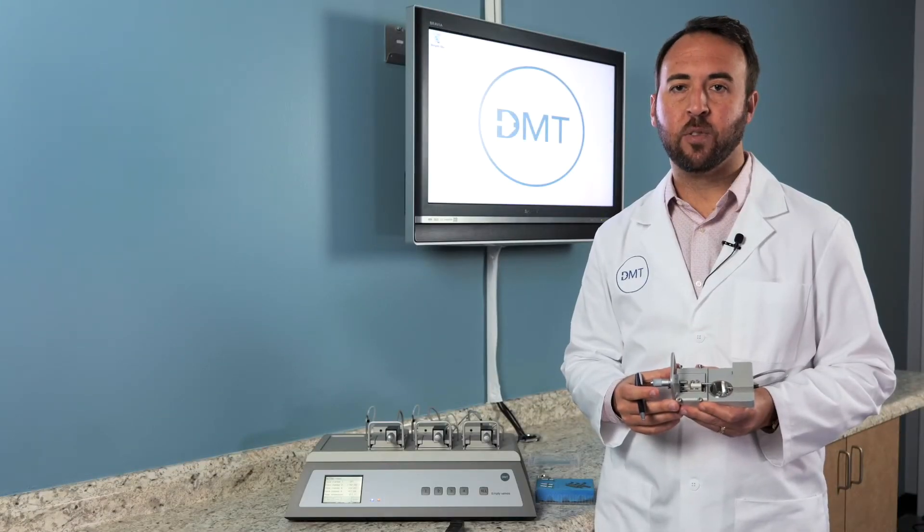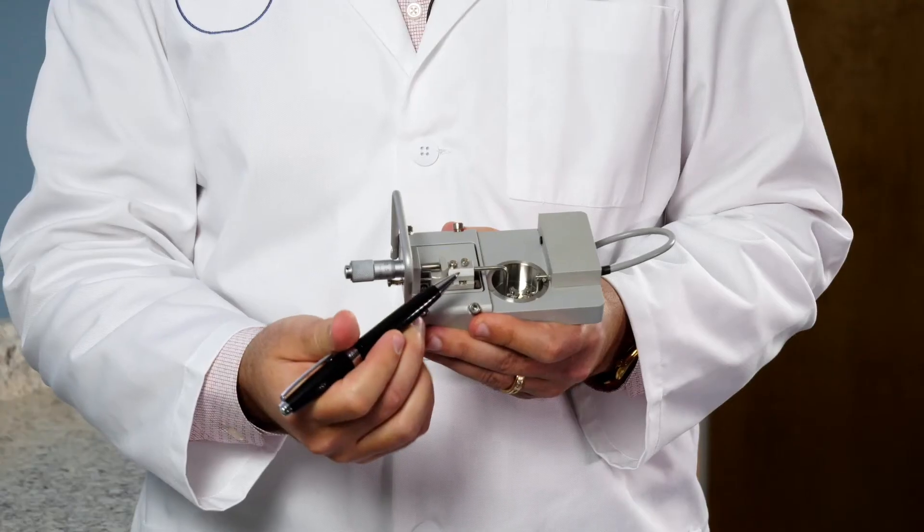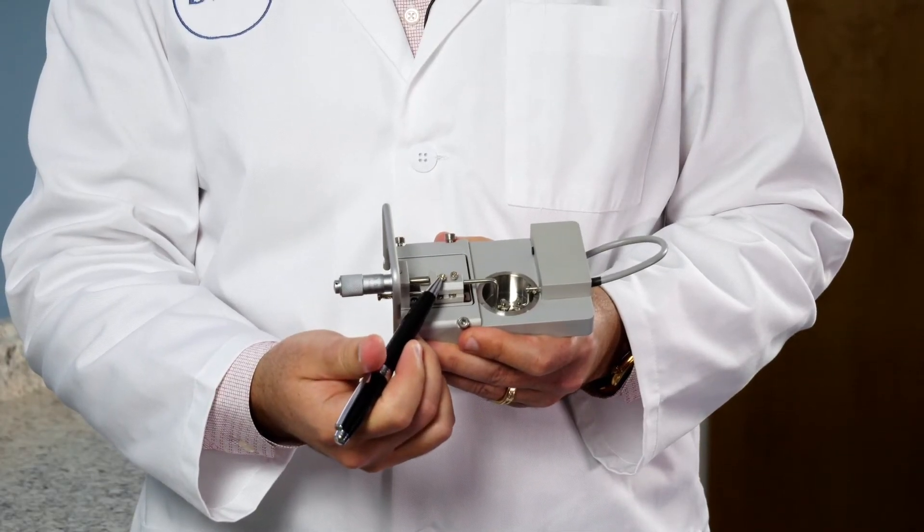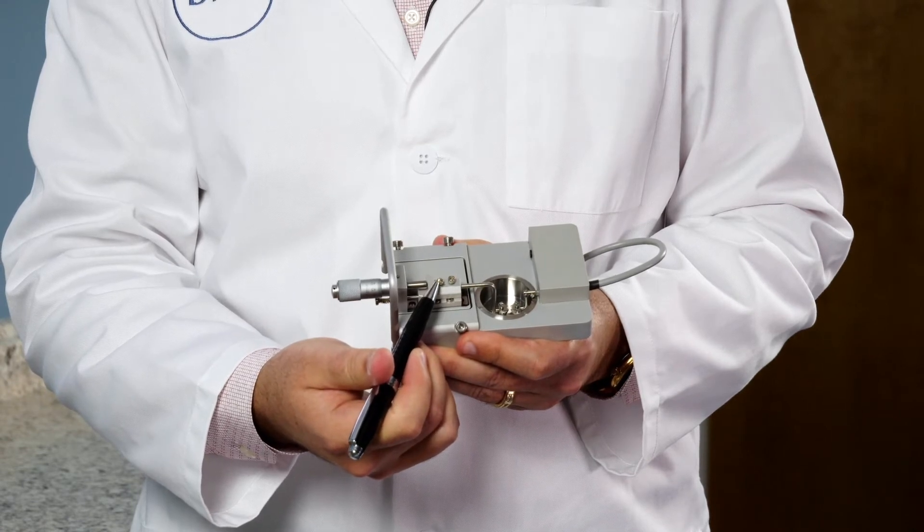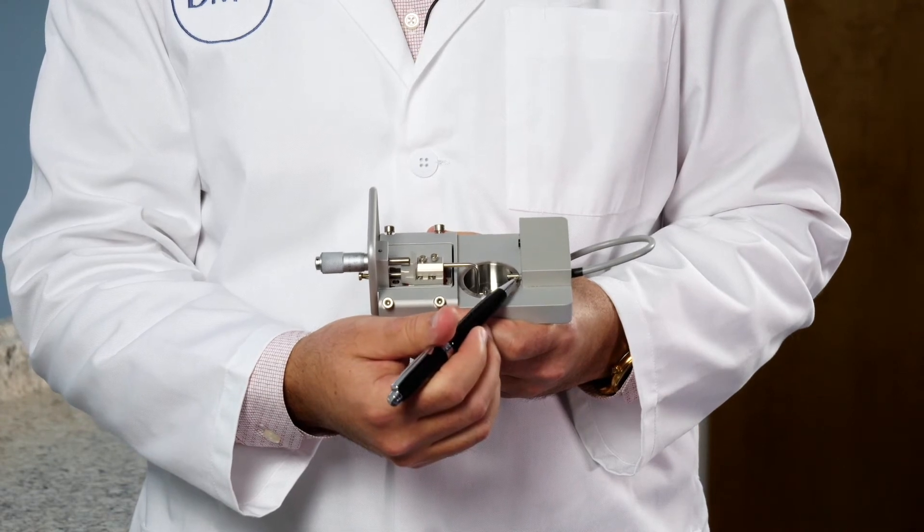When aligning your mounts, you have two types of adjustments: coarse and fine adjustments. For the coarse adjustments, you can loosen the back screw on the micrometer side or the back screw on the transducer side.